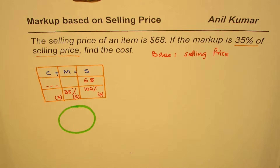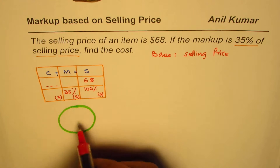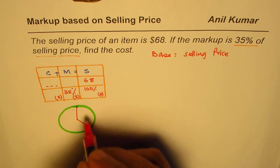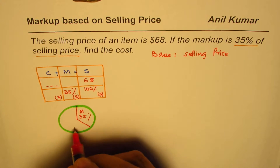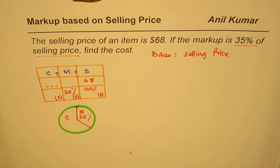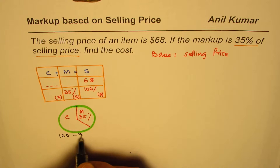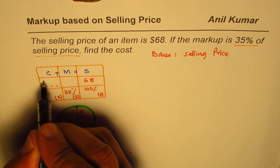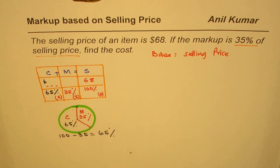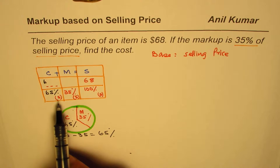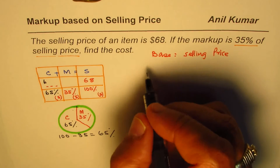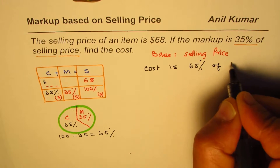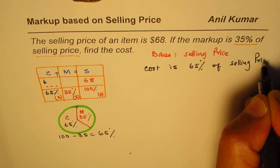From here we can see that markup and cost together make the whole. Markup is 35%, so the balance is the cost. The cost is 100% minus 35%, which equals 65%. So the cost is 65% of the selling price.